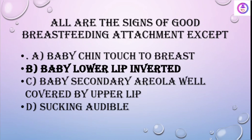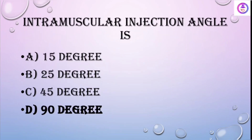Signs of good breastfeeding attachment: the baby's chin touches the breast of the mother, baby's lower lip is everted (not inverted), the baby's secondary areola is well covered by the upper lip, and sucking is audible. Intramuscular injection angle is 90 degrees.